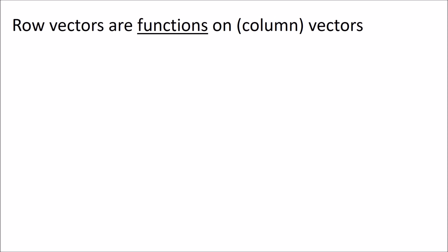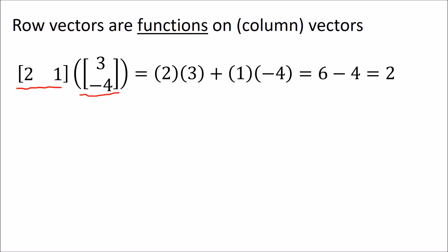We can think of a row vector as a function on a column vector. In this example, the row vector 2, 1 would be the function, and the column vector 3, negative 4 would be the function's input. To find the output value of the function, we just do the standard matrix multiplication or dot product of this row and column vector. Carrying that out, we get 2 times 3 plus 1 times negative 4, which is 6 minus 4, giving us the output 2.